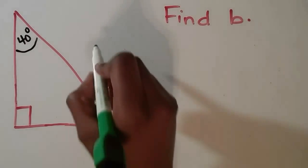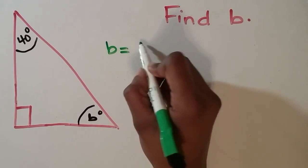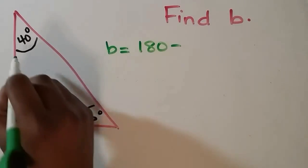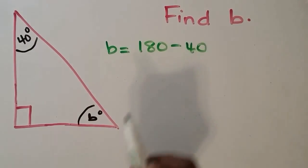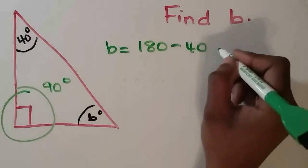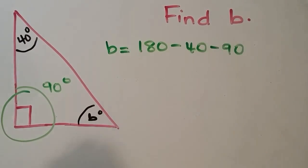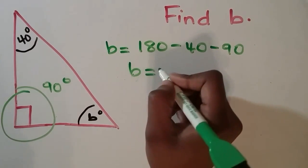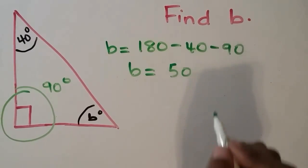On our next problem, we're being asked to find b. And in order to find b, we subtract 90 and 40 from 180. We know that one of the angles, even though it doesn't say 90 degrees, it shows us a sign for a right triangle.